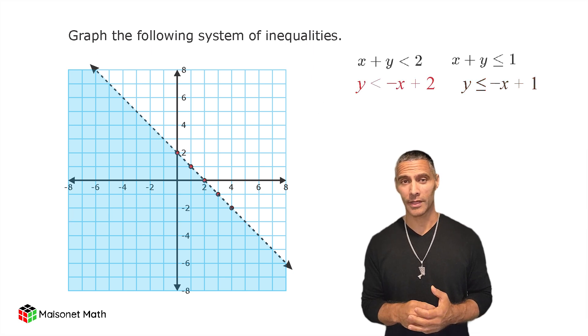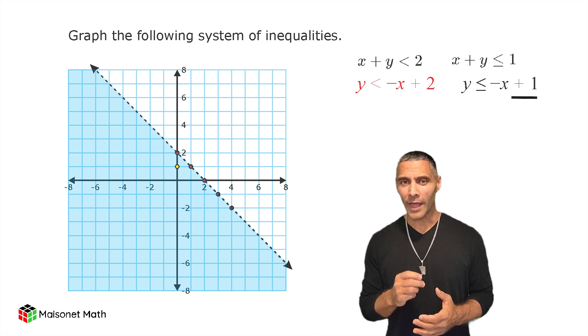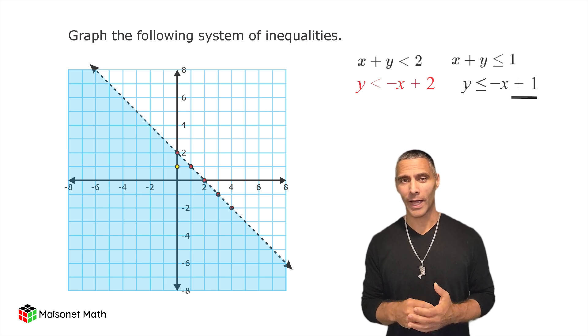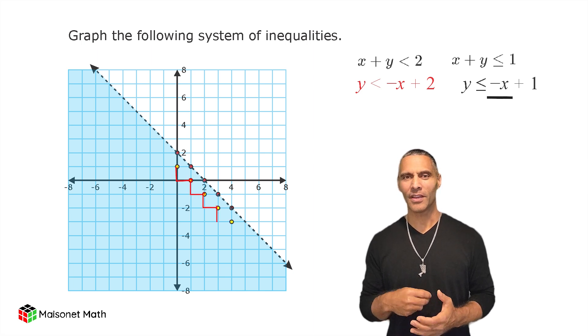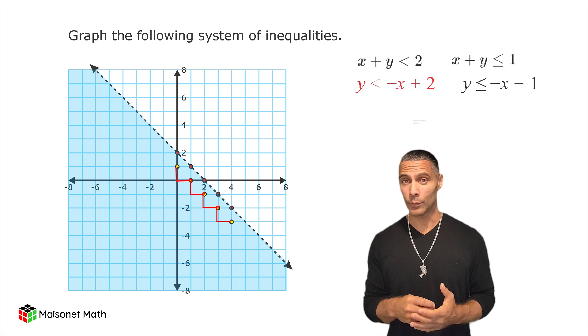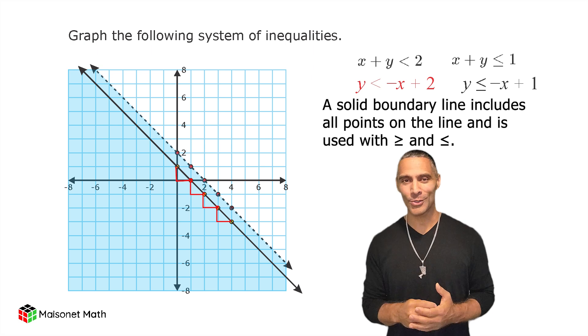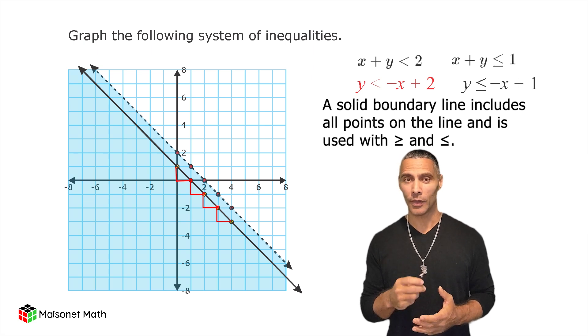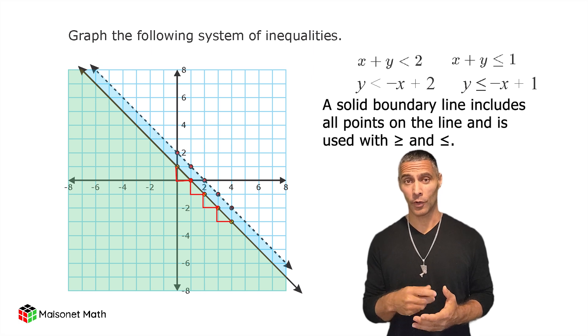Now, for the second inequality, y is less than or equal to negative x plus 1. The y-intercept is 1, so plot a point at positive 1 on the y-axis. Next, we use the slope of negative 1 to move down 1 and right 1 to create more points. Because the inequality is less than or equal to, the line is solid, indicating that points on the line are solutions. Shade the region below this line as the inequality specifies y has to be less than or equal to.